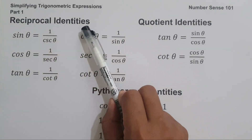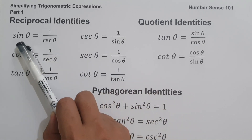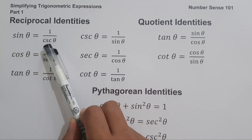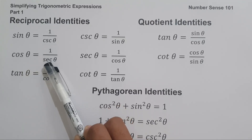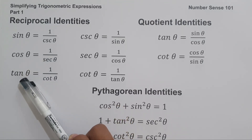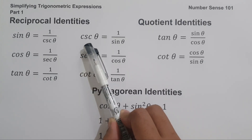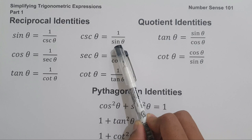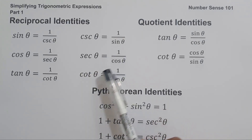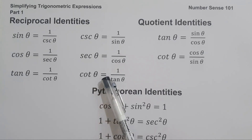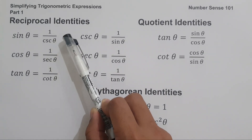The first one is the reciprocal identities. Reciprocal identities consist of: sine θ = 1/csc θ, cos θ = 1/sec θ, tan θ = 1/cot θ, csc θ = 1/sin θ, sec θ = 1/cos θ, and cot θ = 1/tan θ.